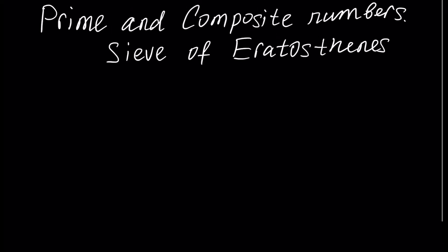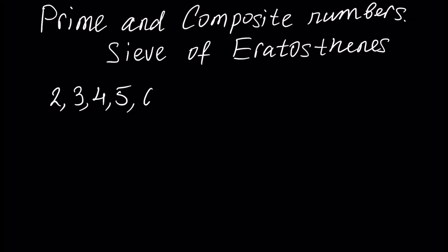Any number bigger than one has at least two divisors: one and the number itself. Let's write down any natural number bigger than one — two, three, four, five, six, seven, eight, and so on. Any positive number bigger than one has at least two divisors: one and the number itself.